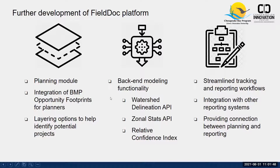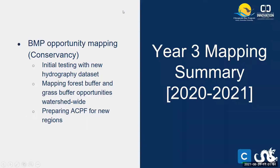To summarize BMP opportunity mapping for Year 3: we conducted initial testing with the new intermediate hyper-resolution hydrography dataset in Region 1 of the Lower Susquehanna and compared it to other publicly available hydrography datasets. We've been working on producing an initial watershed-wide forest buffer and grass buffer opportunity layer, and preparing the ACPF toolbox for additional regions.